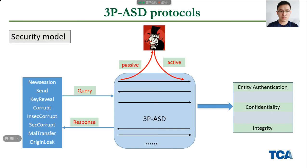During the definition of the adversary model, the challenger needs to respond according to the specific properties of the secret model for the adversary's queries, including new session, sender, query view, insider corrupt, corrupt, mail transfer, and origin leak. The 3PSD protocol is required to satisfy three secret properties: entity authentication, confidentiality, and integrity.